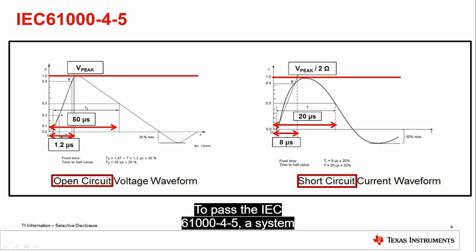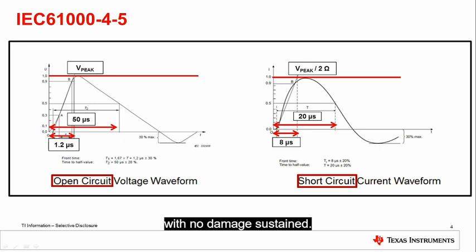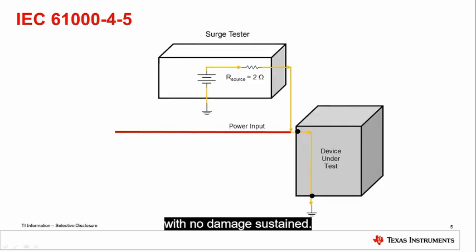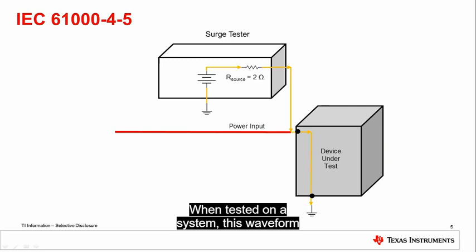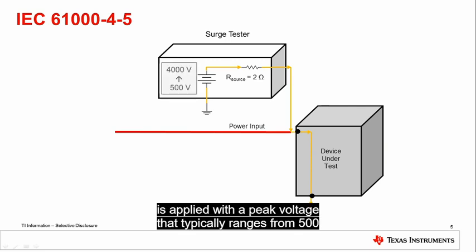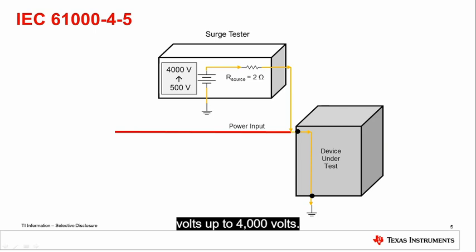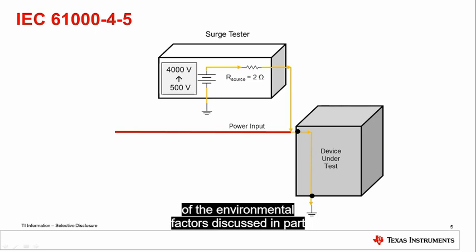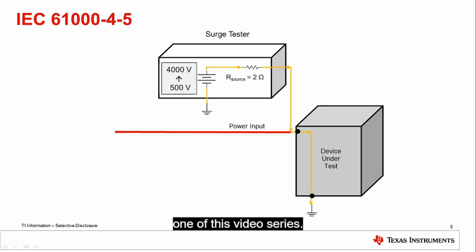To pass the IEC 61,000-4-5 standard, a system must have this waveform applied to the system inputs with no damage sustained. When tested on a system, this waveform is applied with a peak voltage that typically ranges from 500 volts up to 4000 volts. This magnitude is approximated by the risks of the environmental factors discussed in part 1 of this video series.